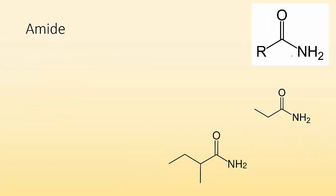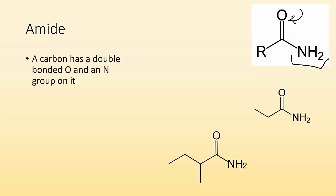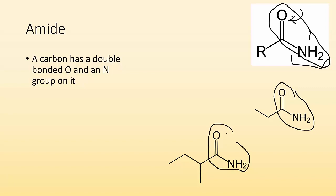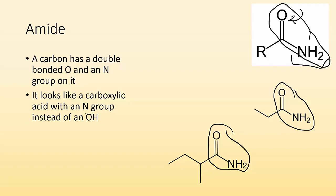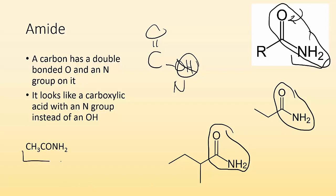Amides are kind of like amines because they have the NH or N group, but you also have a carbonyl group — carbon with a double bond O and a nitrogen group on it. It looks like a carboxylic acid with an N group instead of an OH. In the condensed structural formula it'll look like CH3, CO, NH2. You complete the octet and there's your amide.